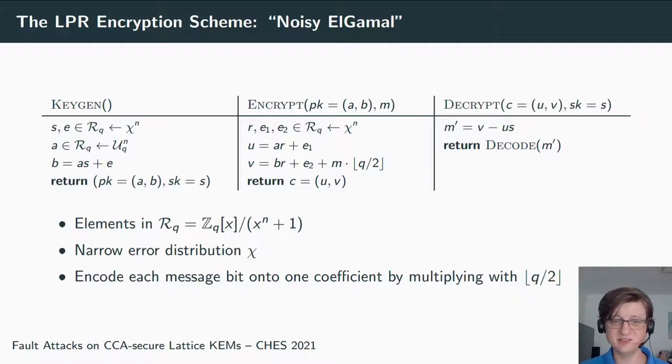For instance, Kyber uses a binomial distribution between, for instance, minus two and plus two. Then a second polynomial a is sampled, where the coefficients are drawn uniformly from Zq, and the public key b is computed as a·s + e. For encryption, you again sample three polynomials from this error distribution: r, e1, and e2. Then you compute the two ciphertext components u and v, and you encode the message onto the second ciphertext component v by encoding it.